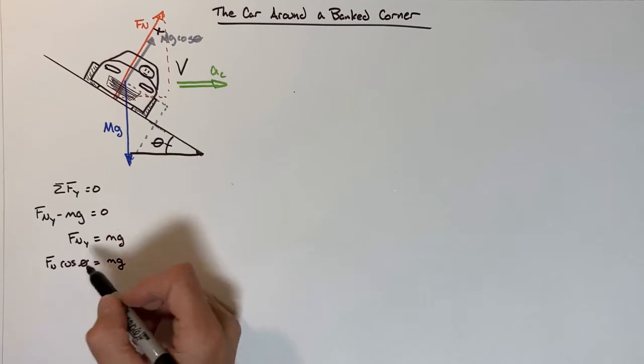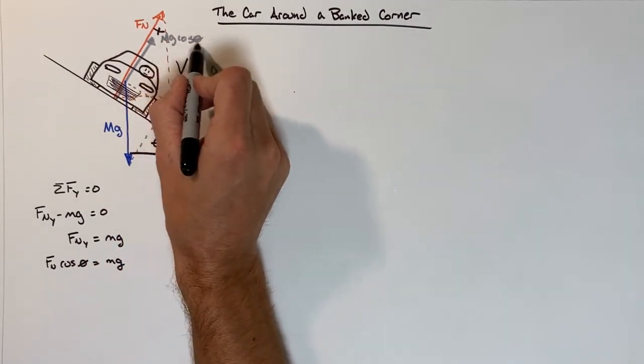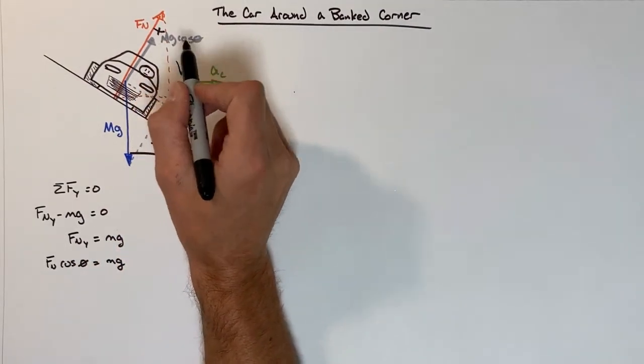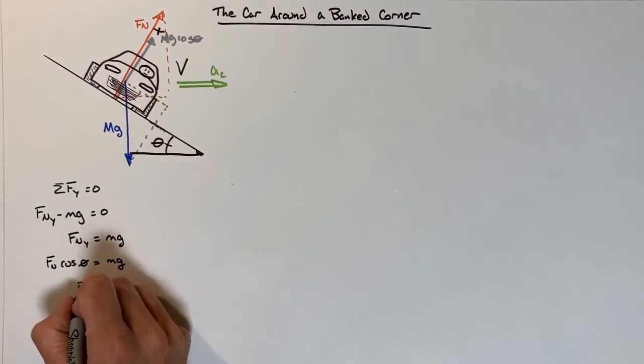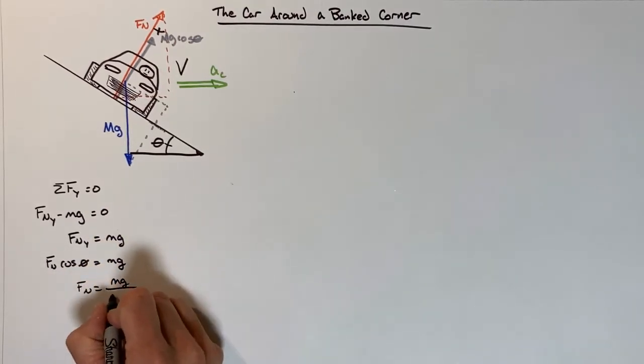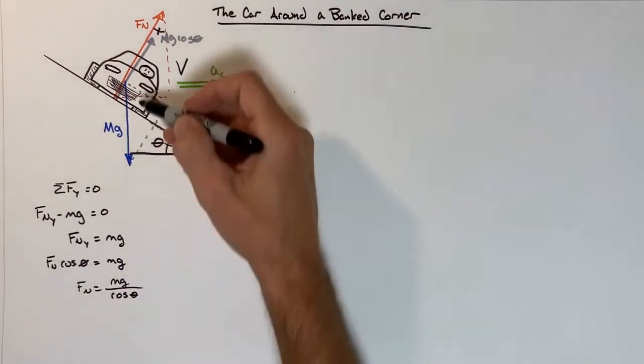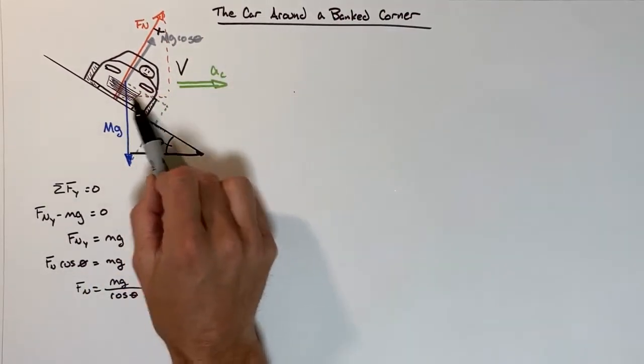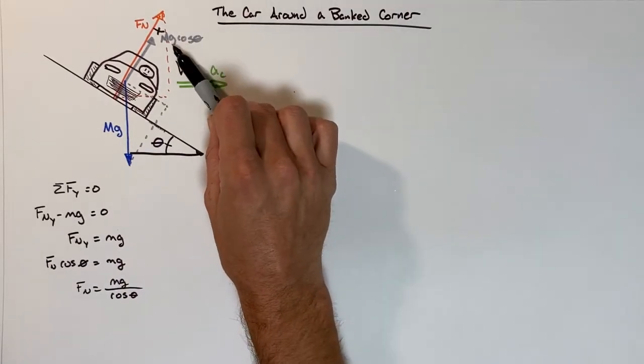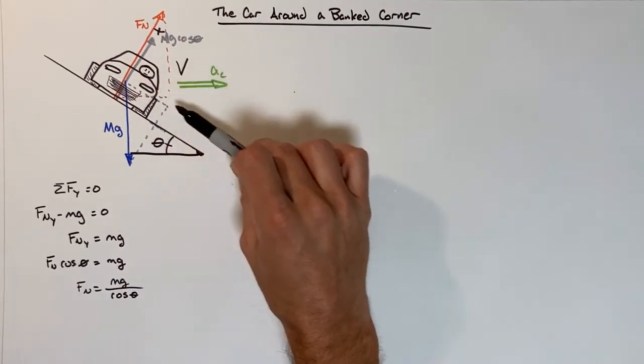If you look at this, this looks very similar to what we have over here. But let's go one more line and we'll find Fn is mg over cosine theta. Fn in the situation of this car going around a banked corner is not the same as for a block on a hill.